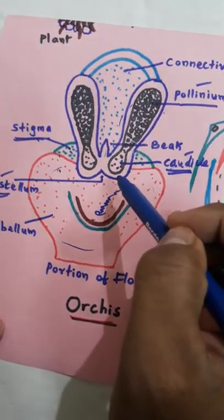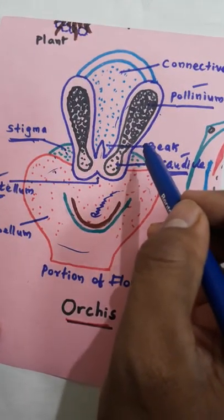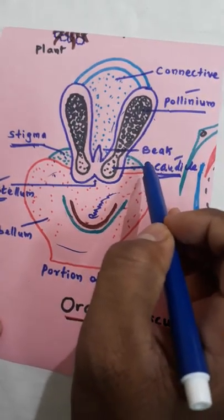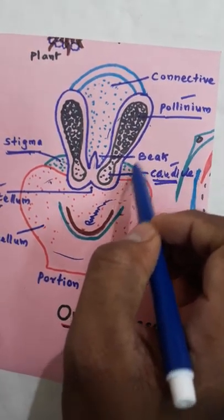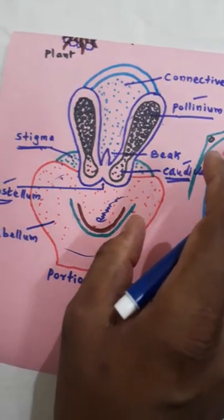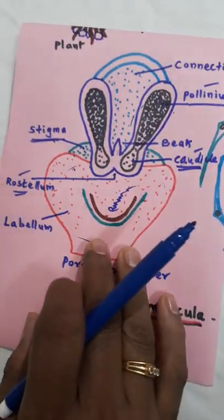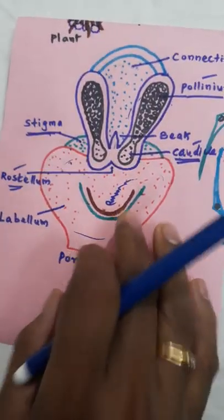When the insect flies away, that same insect visits to another flower. The pollinium is transferred to that flower. Now the pollination takes place. It is a common pollination mechanism in orchidaceae.